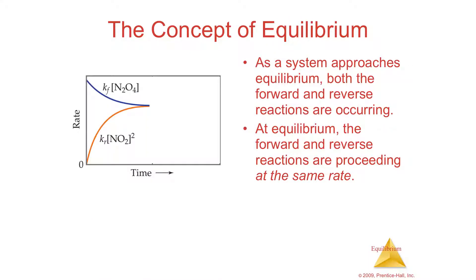Here we have a graph showing that the forward reaction — reactants making products — has the reactants going away, and at the same time products are being made. So you're going to have a rate at which reactants are going away and a rate at which products are being produced. It's possible that these rates are different.